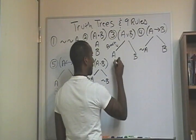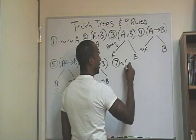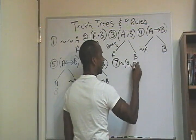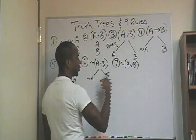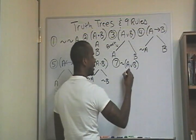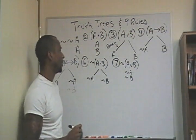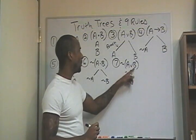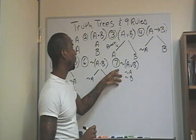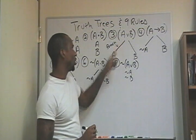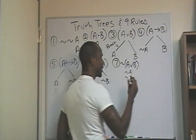Number seven is going to be the negation of a disjunction. So we have not (A or B). Instead of writing branches, I'm going to write it vertically, because it's going to be not A and not B. This is how you apply the rule for the negation of a disjunct in the formation of a truth tree — just commit it to memory.